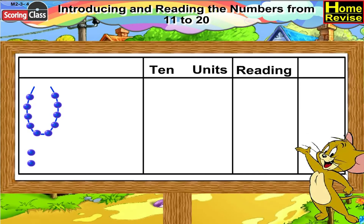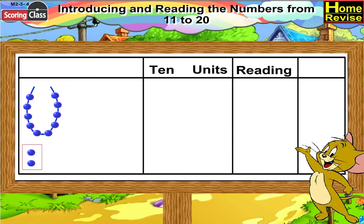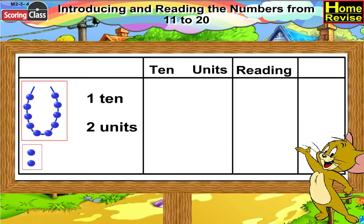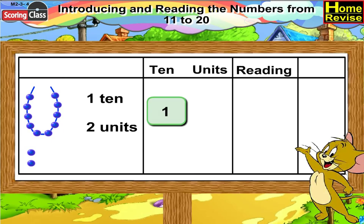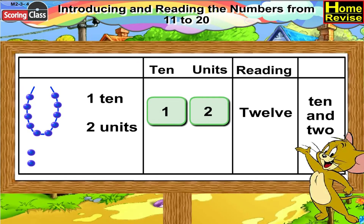In the second picture, you will see a string of ten beads and two extra beads, which means it is one ten, two units. So under tens you write one, and under units you write two. We can read it as twelve, or ten and two.